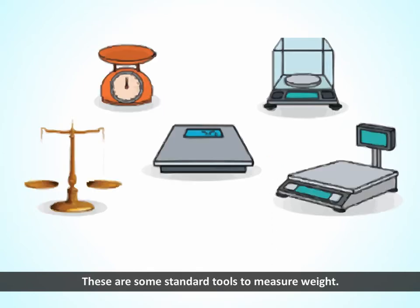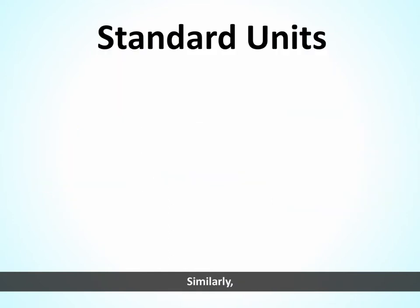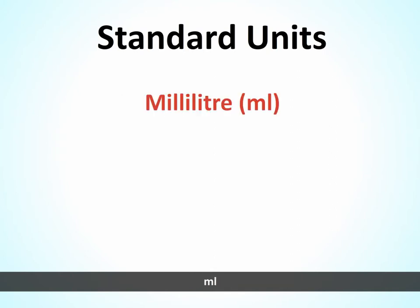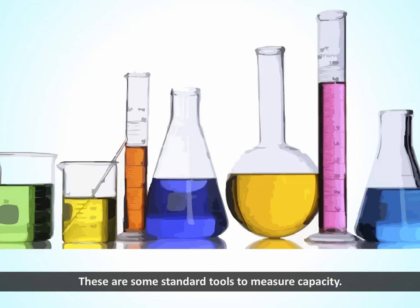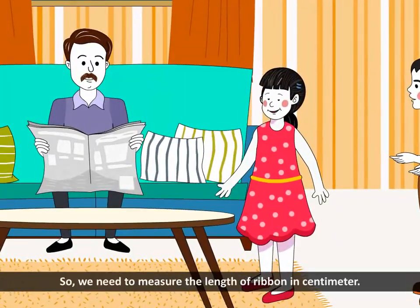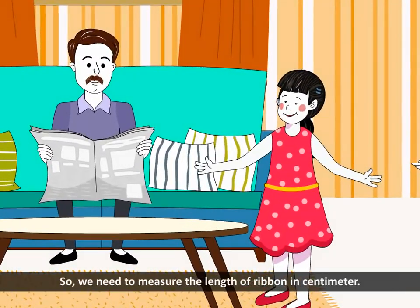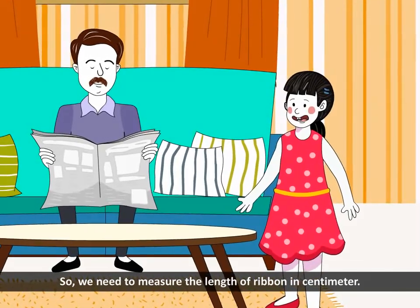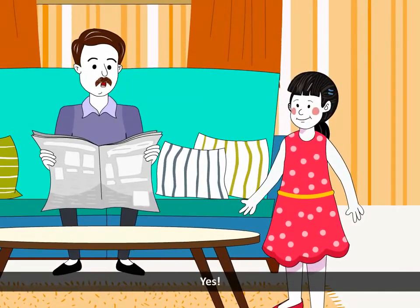These are some standard tools to measure weight. Similarly, two standard units for measurement of capacity are milliliter (ml) and liter (l). These are some standard tools to measure capacity. Okay dad, now we got it. So we need to measure the length of ribbon in centimeter. Yes, good.